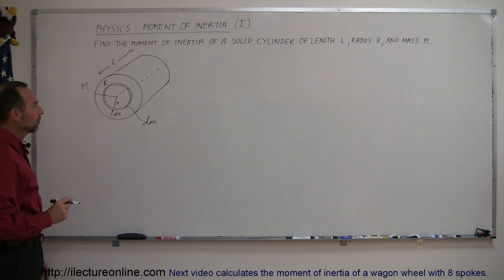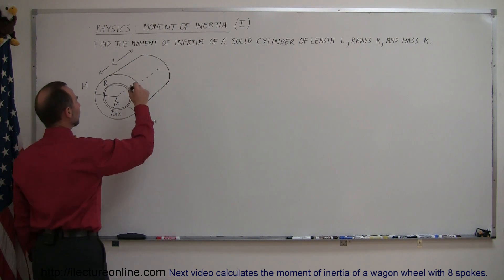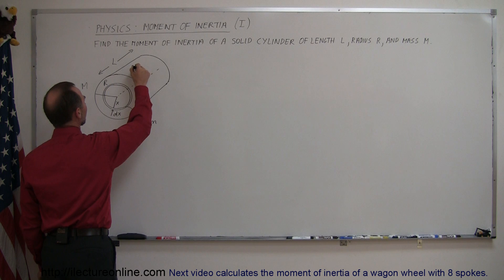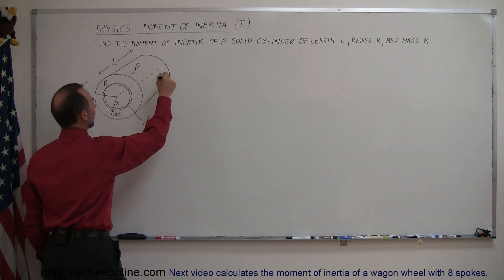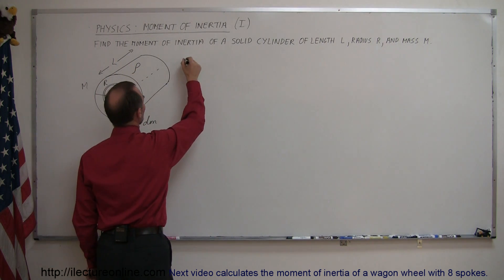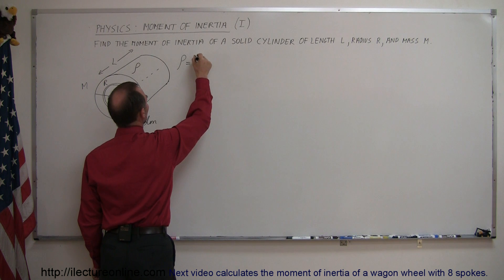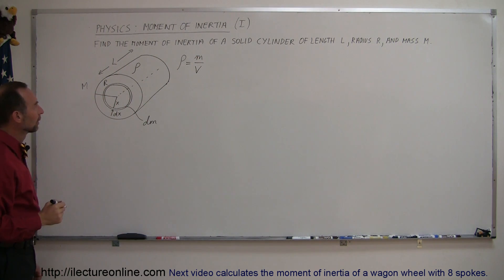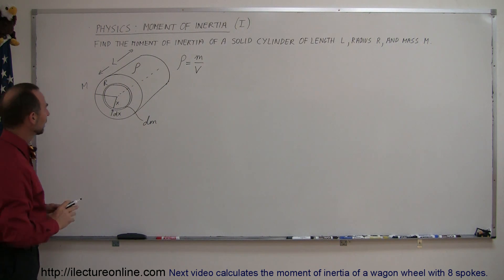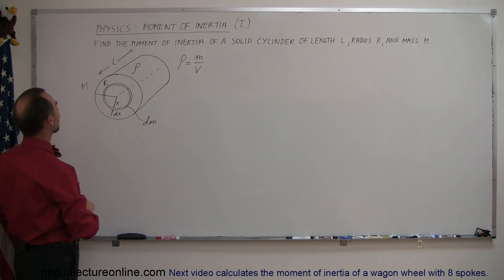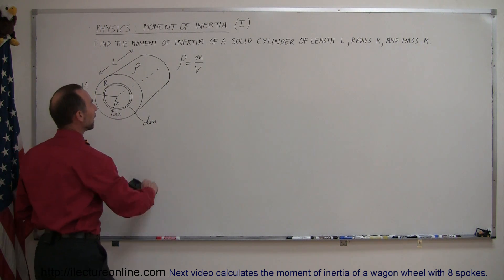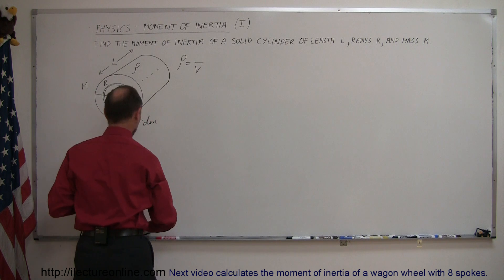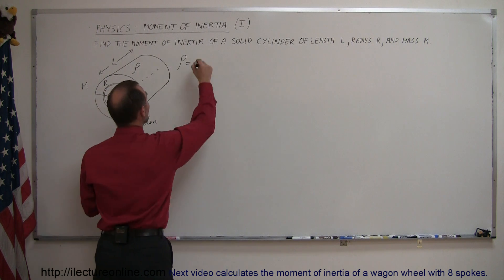Let's assume the cylinder has density rho. By definition, the density of the material is equal to the mass over the volume — and I want to use big M here, so let's use big M throughout.